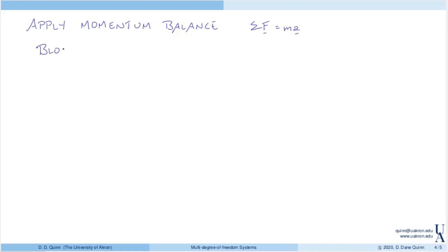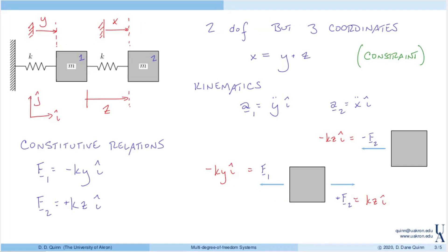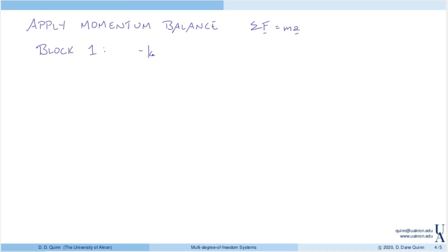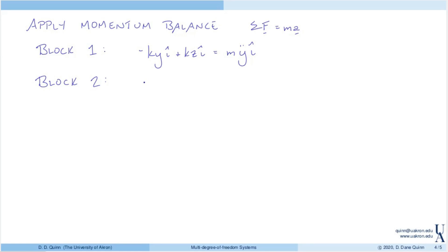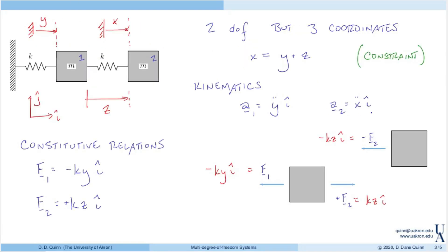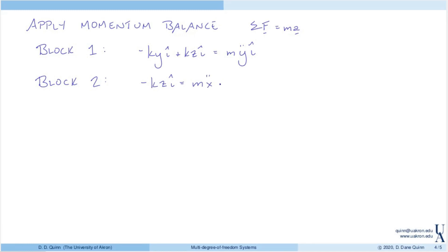For block one, the forces are on the left and right: −ky(i) + kz(i) = m · y-double-dot(i). For block two, there's just the force on the left: −kz(i) = m · x-double-dot(i), where x-double-dot measures the absolute displacement of block two.